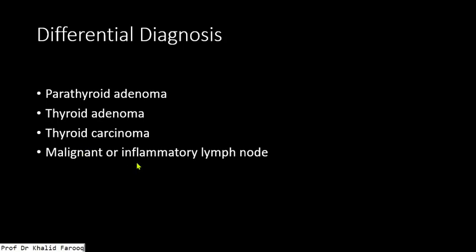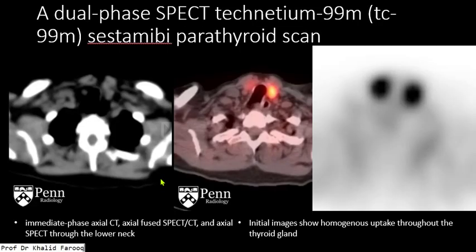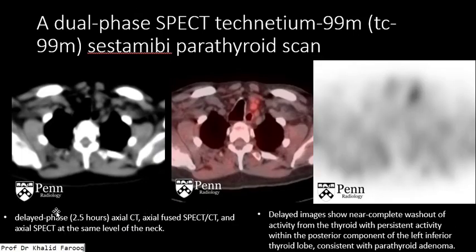We can differentiate the above described entities with the help of technetium-99m sestamibi. Images are acquired in two phases: immediately after technetium-99m sestamibi injection, and delayed images taken around two to three hours after injection.